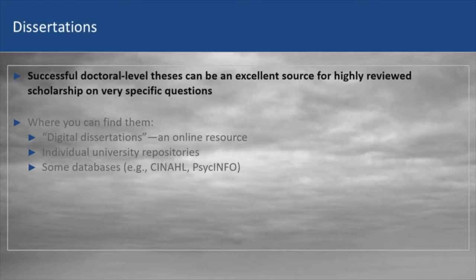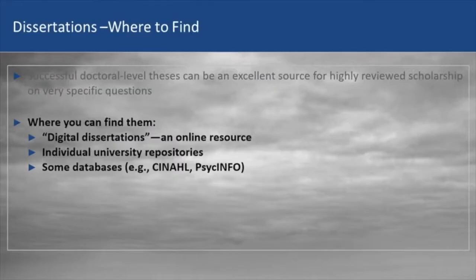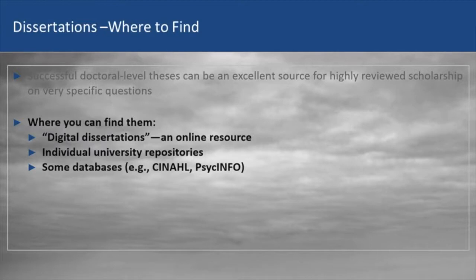Dissertations — successful doctorate-level work is a rich source for information on very specific questions. Before you undertake your own doctoral-level work, or if you have a question someone might have already worked on, it's an excellent idea to find what's already been done. There is a database of most dissertations done in the U.S., Canada, and Western Europe. Not all are in digital dissertations as they used to be in the UMI Clearinghouse, but it's still an excellent source. You might also want to check institutional repositories for specific universities with strength in your area. Some databases like CINAHL and PsycINFO also list dissertations.